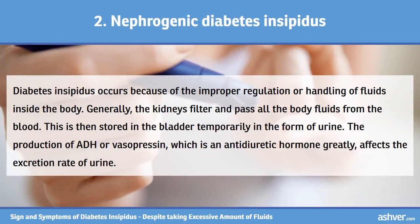Normally the kidney conserves water and makes it concentrated due to a response or signal to the kidney according to the ADH level, but in nephrogenic diabetes insipidus, the kidney does not respond to the signals of ADH. Nephrogenic diabetes can be inherited, but there are certain drugs which are responsible for causing diabetes insipidus, such as lithium. It is also seen when calcium levels in the blood increase and potassium levels decrease.